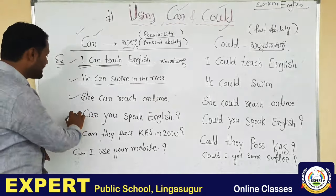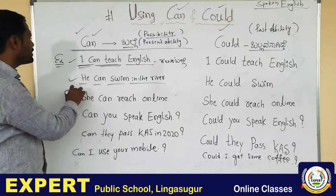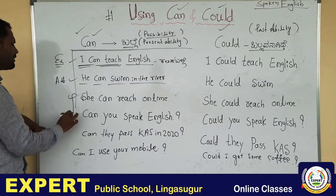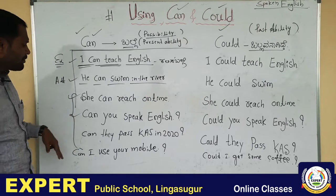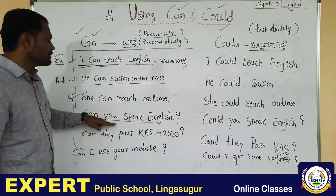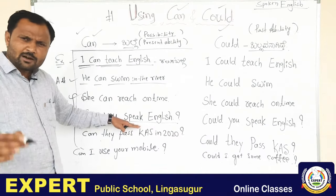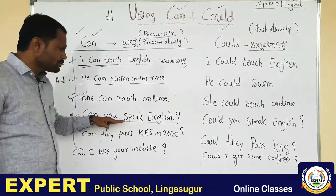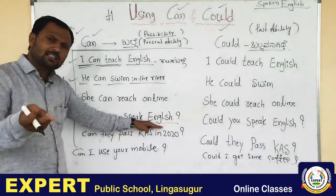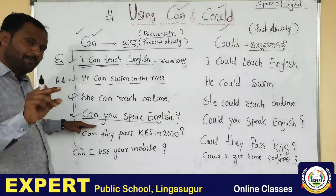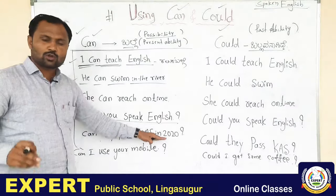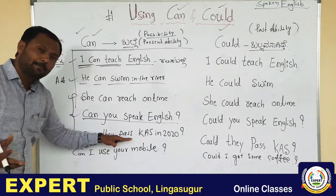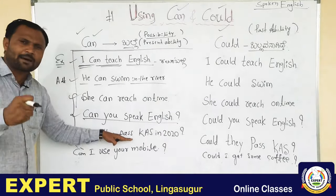Next, can you speak English? — asking if someone has the ability to speak English. Can they pass the case exam in 2020? — do they have the ability to pass? These are examples of using 'can' to talk about ability.